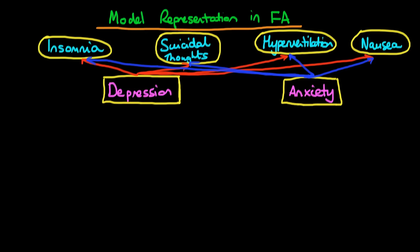In this video, I want to talk about how we can actually represent models and data in factor analysis. And in order to talk about this, I'm going to use the same example which we talked about in the last video, where we have four observed factors.